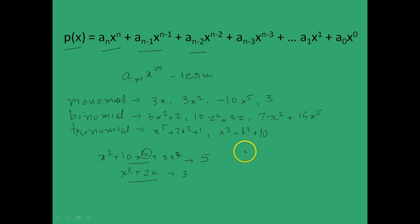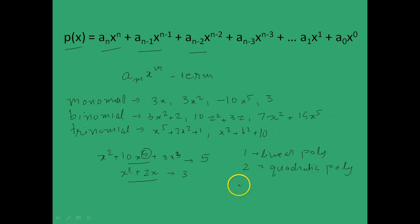If the degree of a polynomial is 1, then it is called a linear polynomial. If the degree is 2, then it is called a quadratic polynomial. And if the degree is 3, then it is called a cubic polynomial.